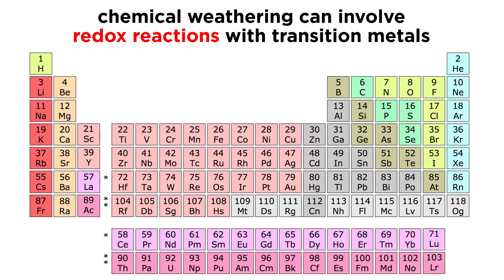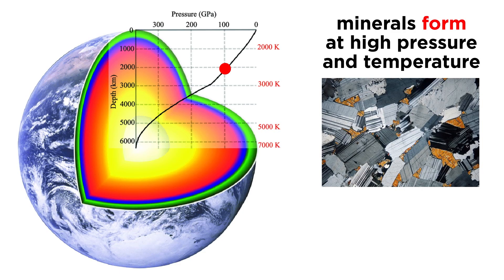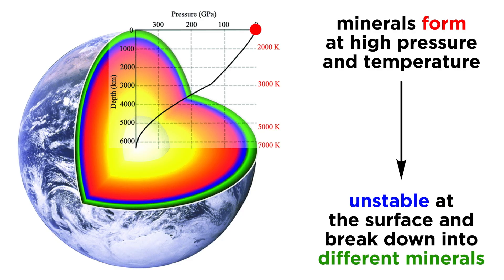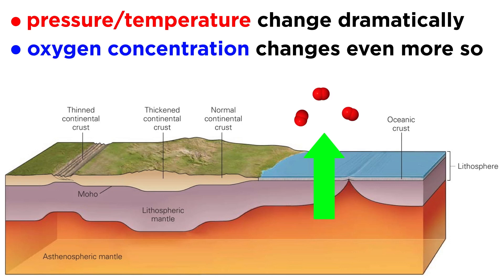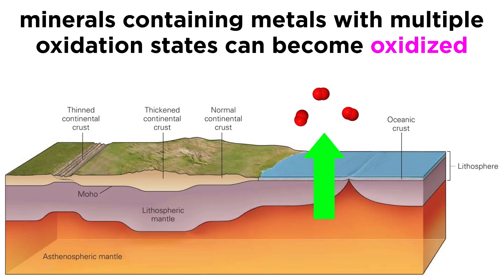Chemical weathering involving redox reactions is extremely important when transition metals, especially iron, are involved. At the most basic level, chemical weathering occurs because most minerals form deep within the earth, where the pressure and temperature are orders of magnitude greater than at the surface. Thus, when they are exhumed, they are often unstable and break down into minerals that are more stable under these new conditions. The difference in oxygen concentration between the surface and deep lithosphere can be over 15 orders of magnitude. Because of this, compounds that contain metals with multiple oxidation states become oxidized — in other words, get some of their valence electrons stolen by oxygen.